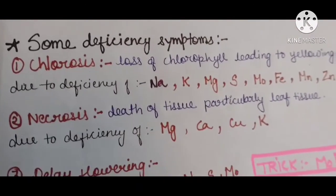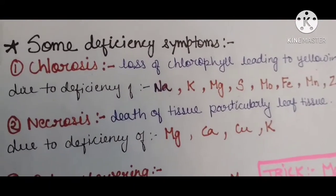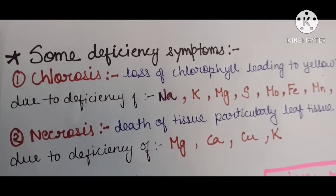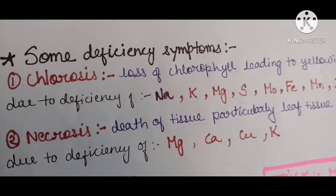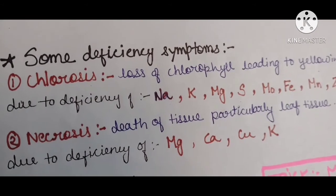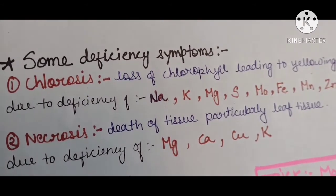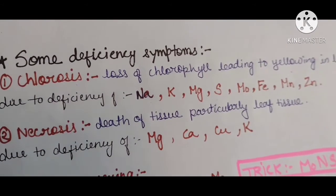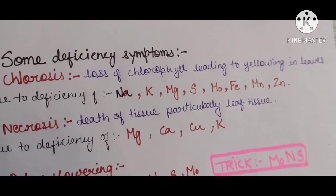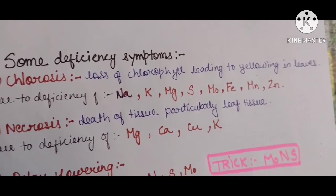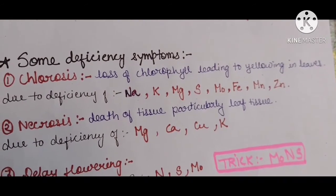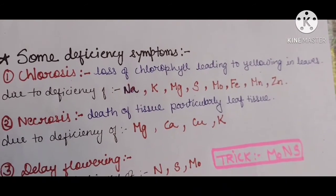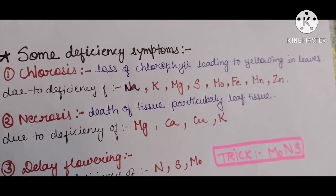Now let's come to some deficiency symptoms. First is chlorosis. In chlorosis, there is a lack of chlorophyll, which causes the leaves to turn yellow. This is a key deficiency symptom to understand.